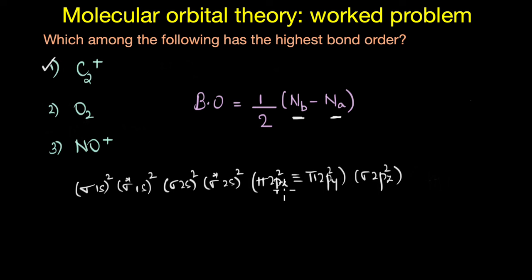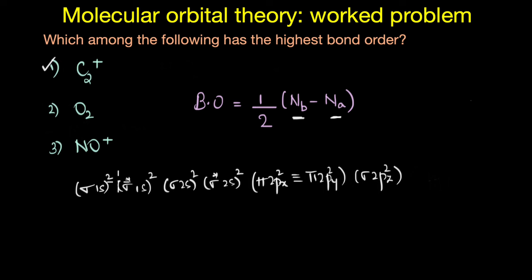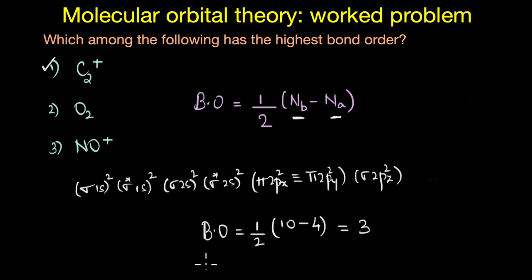The electronic configuration of NO+ is: σ1s², σ*1s², σ2s², σ*2s², and then π2px and π2py orbitals are filled first while σ2pz is filled later, due to significant sp mixing. Calculating the bond order: half of bonding electrons (10) minus anti-bonding electrons (4) gives a bond order of 3.